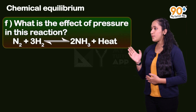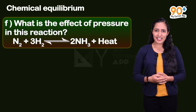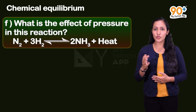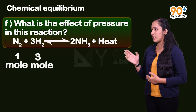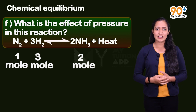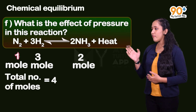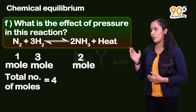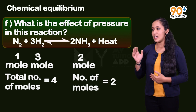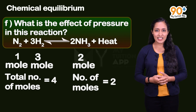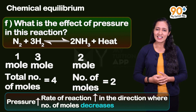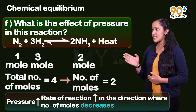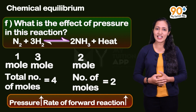What is the effect of pressure in this reaction? In this reaction, 1 mol nitrogen and 3 mol hydrogen combine to form 2 mol ammonia. On the reactant side, total number of moles equals 1 + 3 = 4. On the product side, number of moles equals 2. We already learned that when pressure of a system increases, the reaction rate in the direction with fewer moles increases. So in this case, when pressure increases, the forward reaction rate increases.